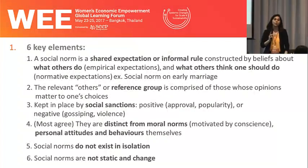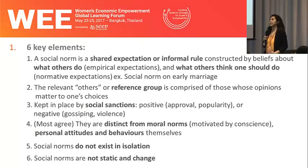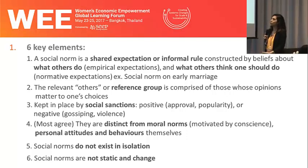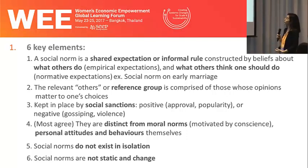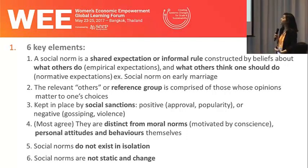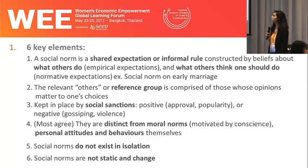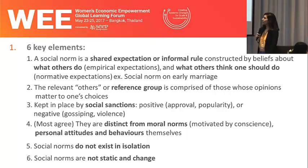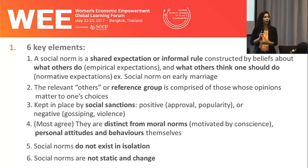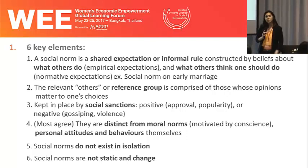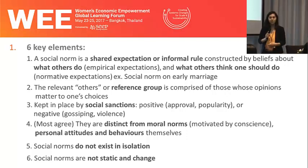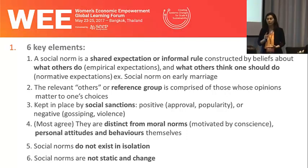Where all of these and other approaches converge is around six key elements. The first is that a social norm is a shared expectation, or informal rule, constructed by shared beliefs about what others do — or descriptive norms, also called empirical expectations — and doing what others think one should do. An example of a social norm seen to commonly underpin child, early, and forced marriage is a shared belief that girls should be docile, should be shy, should be submissive, should marry early in order to preserve the honor of their families.